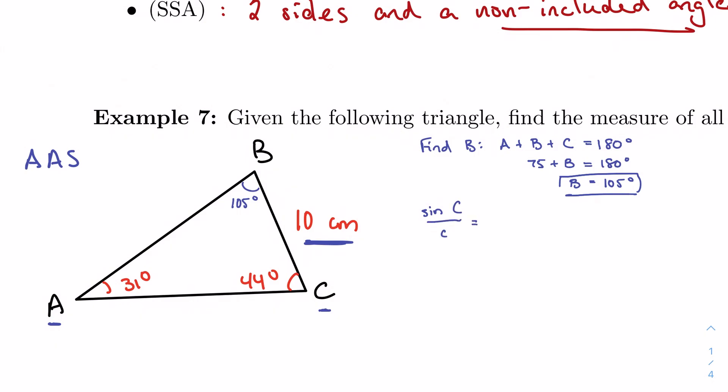If I want to find sine C over C, I need to know, I need another ratio that I have both parts of the fraction for, and that would be the one that relates sine of A to the side A. So sine A over A, because sure enough, sine C over C, so I have sine of 44 degrees over C, which I'm solving for. I don't know what C is. That's going to be equal to sine of A, which is 31 degrees, divided by A, which is 10 centimeters.